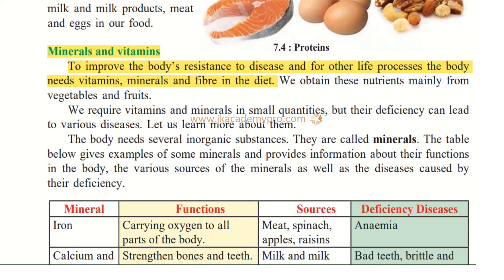Fiber means the thread-like substances that are present in our food. For example, when you eat a mango, you notice that thread-like texture — that is fiber. All food has fiber in various proportions, and it is very important for digestion and for the body to eliminate waste products. We obtain vitamins and minerals mainly from vegetables and fruits.